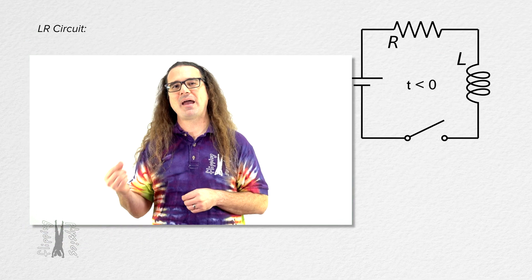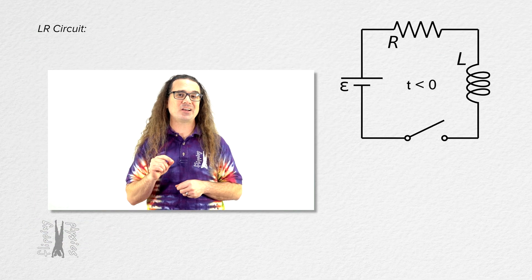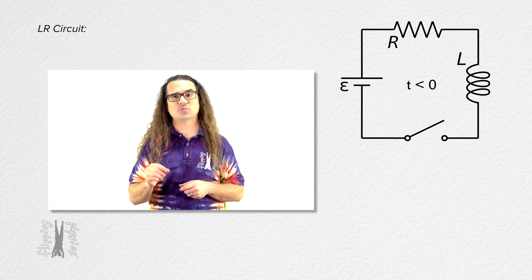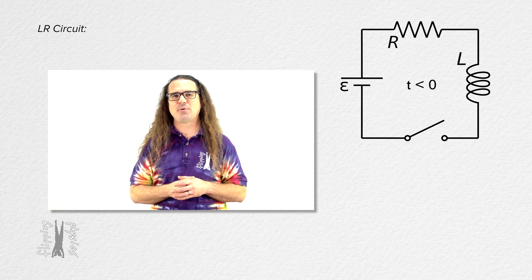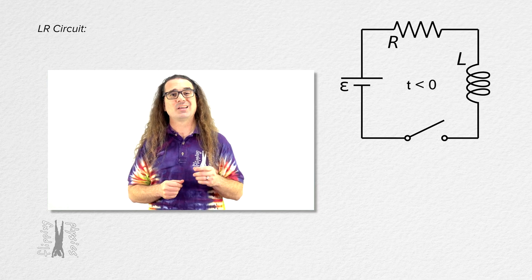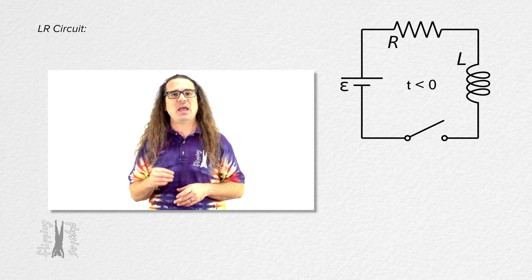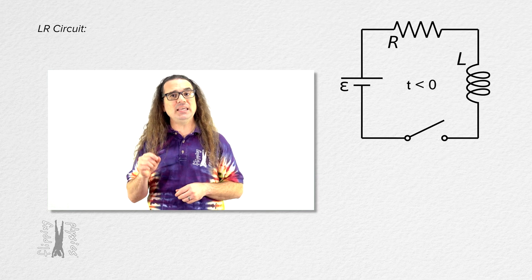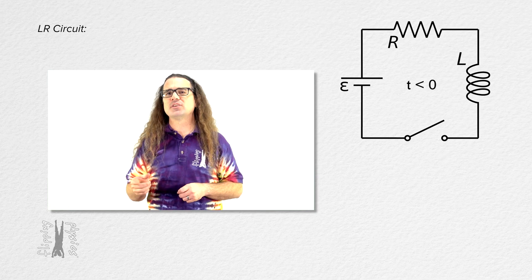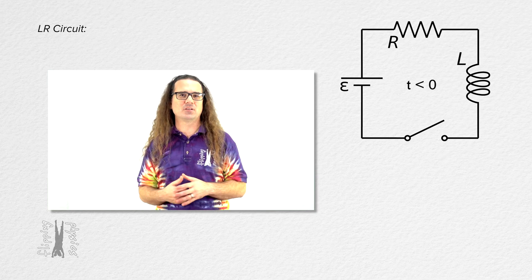This LR circuit is a circuit with a battery, a resistor, an inductor, and a switch. Before time t equals zero, the switch is open and has been open for a long time. At time t equals zero, the switch is closed and remains closed.